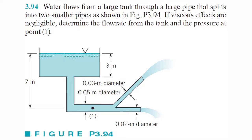Alright, so we've got another Bernoulli problem. This one says water flows from a large tank through a large pipe that splits into two smaller pipes. If viscous effects are negligible, determine the flow rate from the tank and the pressure at point one. This one requires a little bit of an engineering mindset — you'll see why. Let's get started.